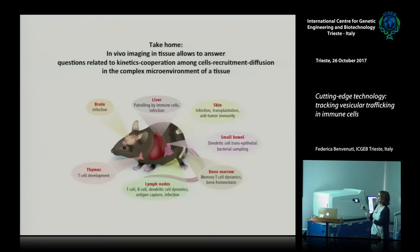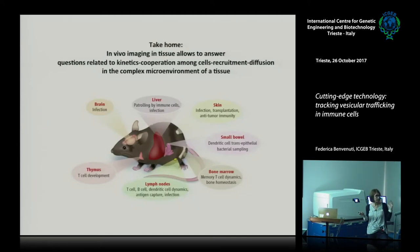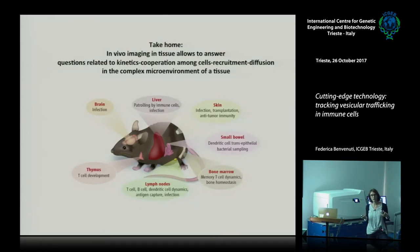The take-home message is that in vivo imaging in tissues has been really important to change our way of understanding the immune system. There are several different examples of how this can be applied — studying infections in the brain, liver, and skin, bone homeostasis in bone marrow, lymph nodes, and thymus development. With the evolution of several types of probes, it's now really interesting to look at how molecules such as soluble mediators are diffused during an immune response.